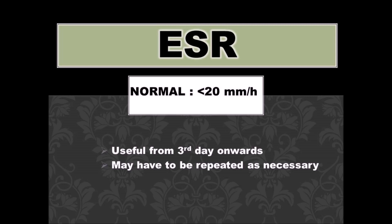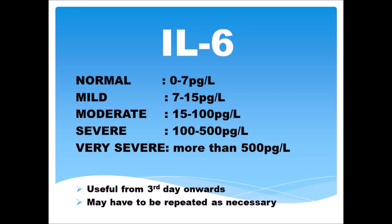ESR, or erythrocyte sedimentation rate, is the next marker. It is elevated in acute infections and also in chronic infection states. A value less than 20 is considered normal; however, more than 20 gives important clues regarding the level of infection. Interleukin-6, or IL-6, is another inflammatory marker: less than 15 is considered mild, 15 to 100 is moderate, and over 100 is severe.